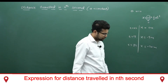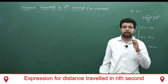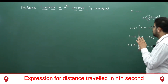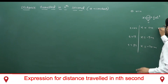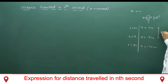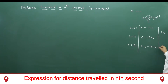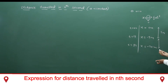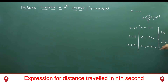What we need to observe is: the distance travelled in the 1st second is 5 meters, and the distance travelled in the 2nd second is 15 meters, so the total distance travelled in 2 seconds is 5 + 15 = 20 meters.